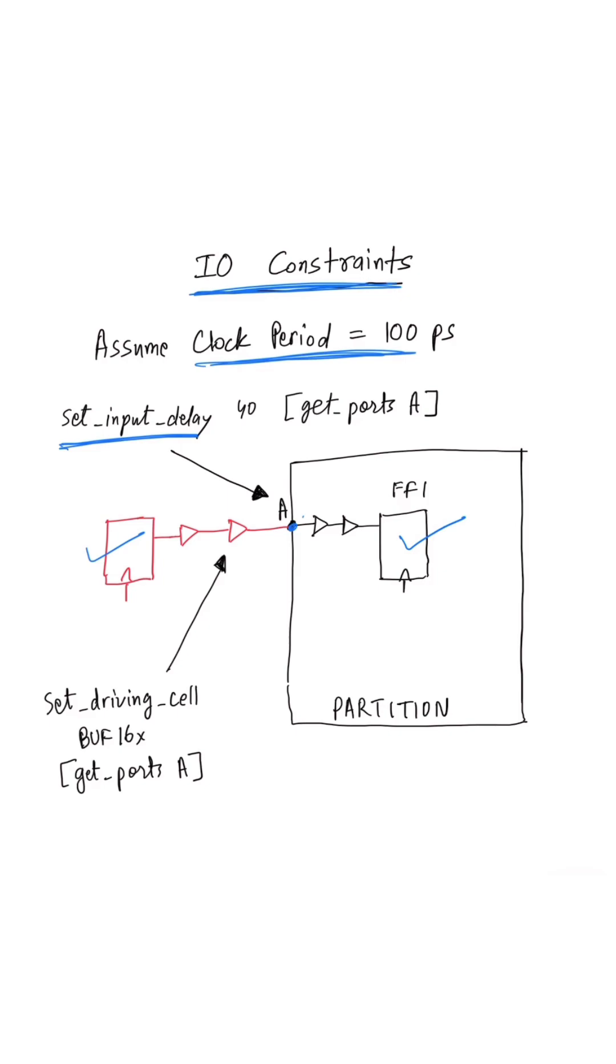At partition level, for doing the timing analysis from port A to FF1, you need to accurately estimate how much data path delay will be consumed outside the partition. That is done through the set input delay command.